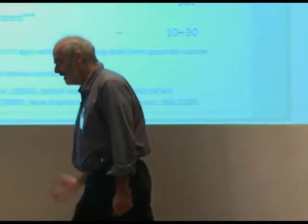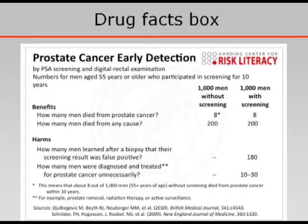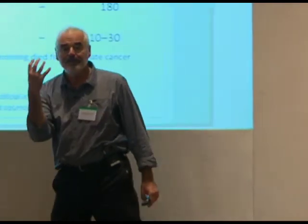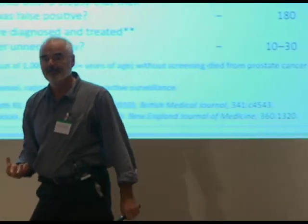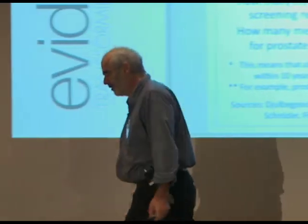Of course it can be very uncomfortable. This is one that Gigerenzer has on his website about prostate cancer early detection — a drug facts box showing how many men die from prostate cancer or die from any cause, with and without screening. There's not a lot of difference between the treatments, but when you look at the harms, they're all on the screening arm. Information presented as transparently as this can be deeply threatening. And of course we've just seen all the recent discussion about breast cancer screening as well.